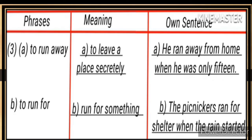Third pair: (a) 'To run away' — meaning: to leave a place secretly. Sentence: He ran away from home when he was only fifteen. (b) 'To run for' — meaning: run for something. Sentence: The picnickers ran for shelter when the rain started.